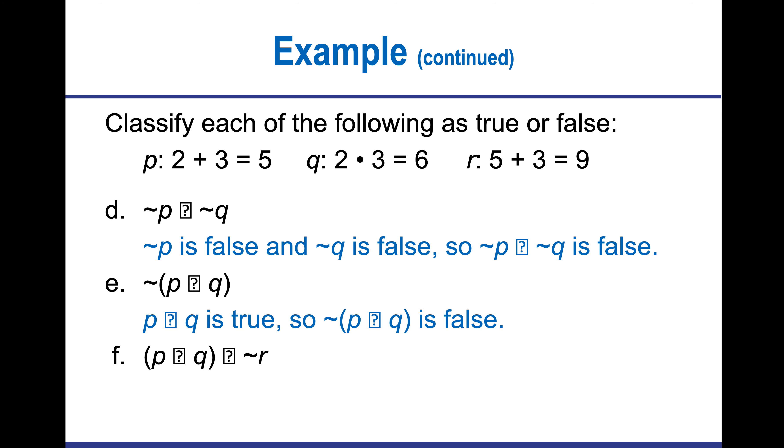Not P and Q. If P and Q is true, then not P and Q is false. Here I'm going to have P and Q is true and not R is true because if I say five plus three is not nine, then it becomes true. Then the whole thing is true because all three of them are true.